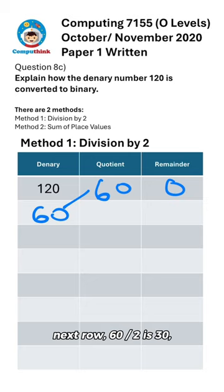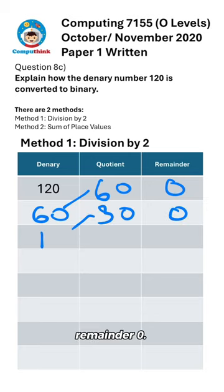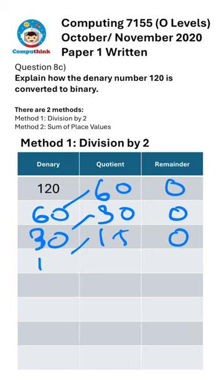Now you bring this to the next column, next row. 60 divided by two is 30, remainder zero. 30 divided by two is 15 and remainder zero.